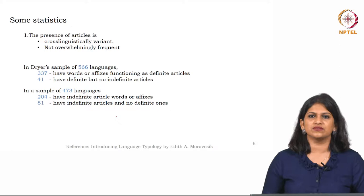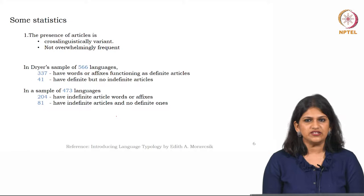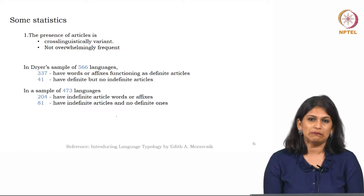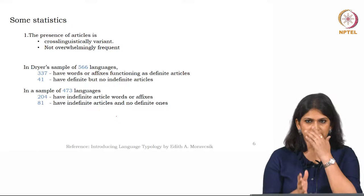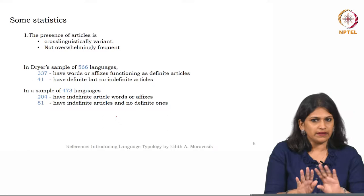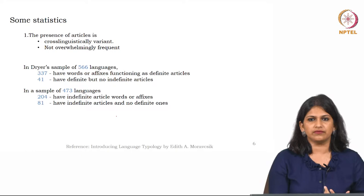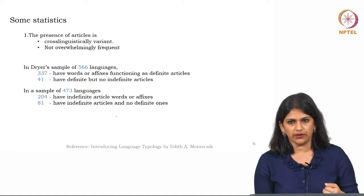A lot of cross-linguistic distribution of definite and indefinite articles have been studied. Jakobson, one of the finest linguists that we have ever had, says that languages differ essentially in what they must convey, not in what they may convey. So there is a difference between 'must' and 'may.' When we say language A is different from language B, we must account for the solid differences that we observe through the empirical evidence or through the empirical data.